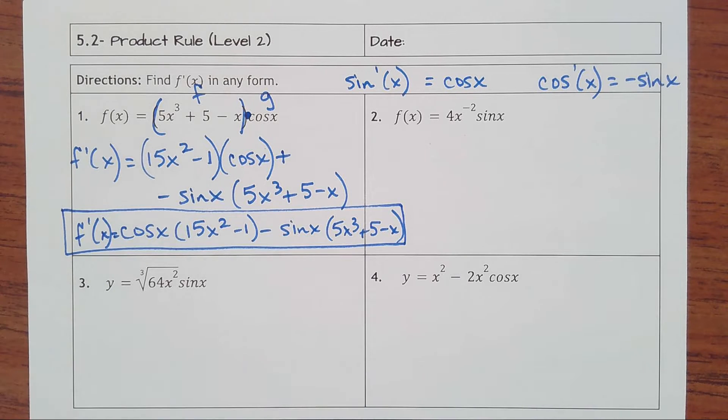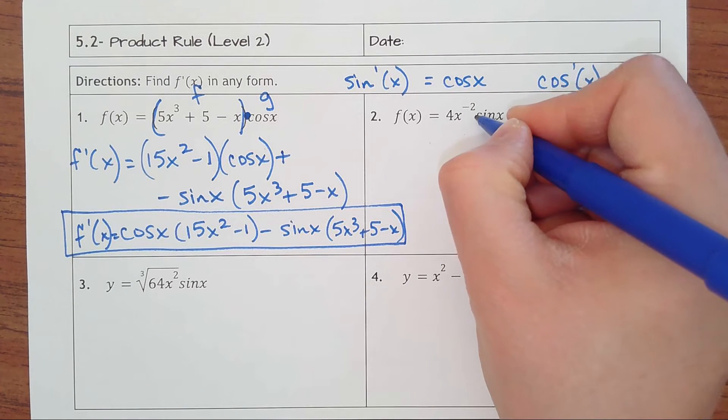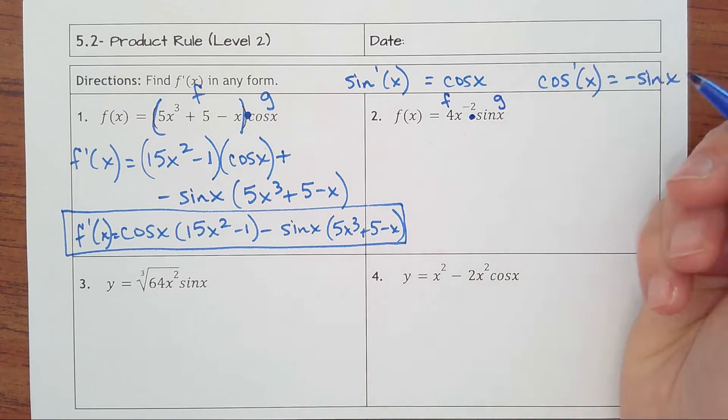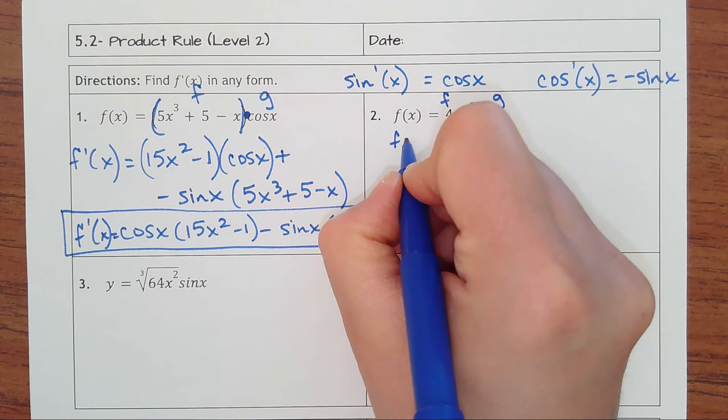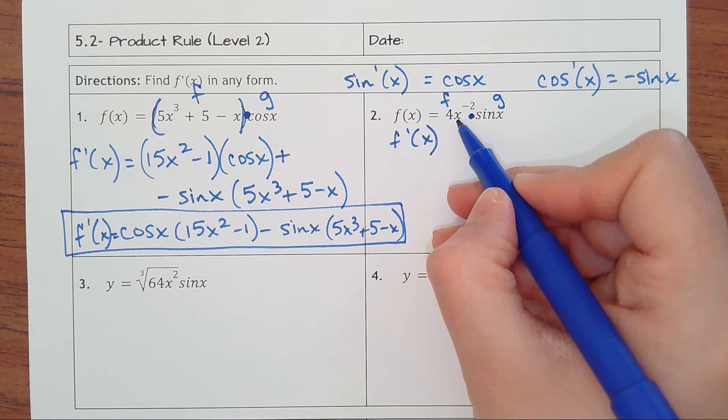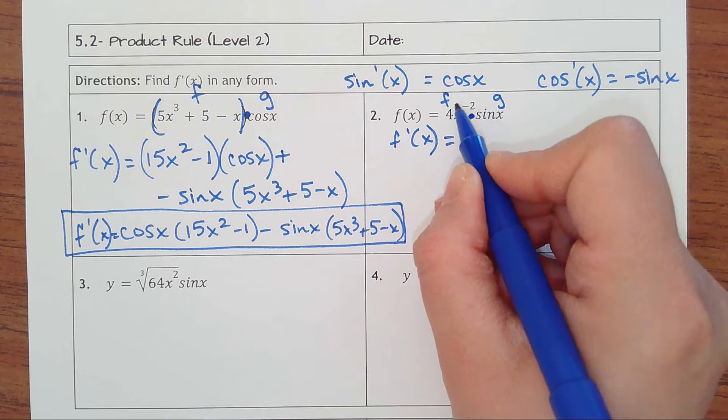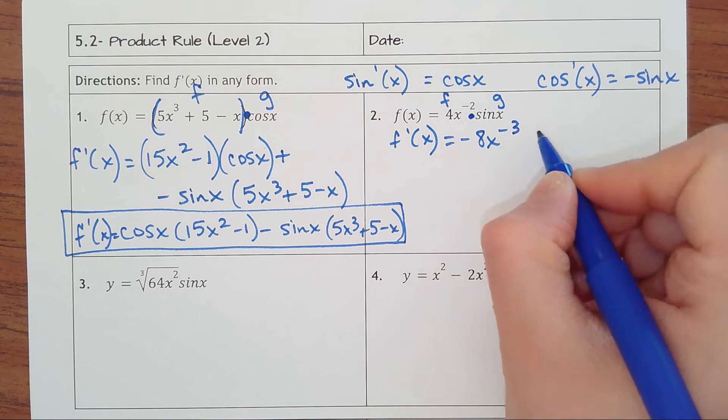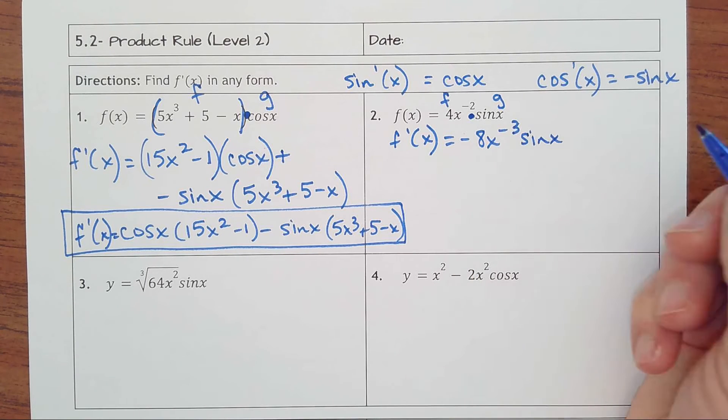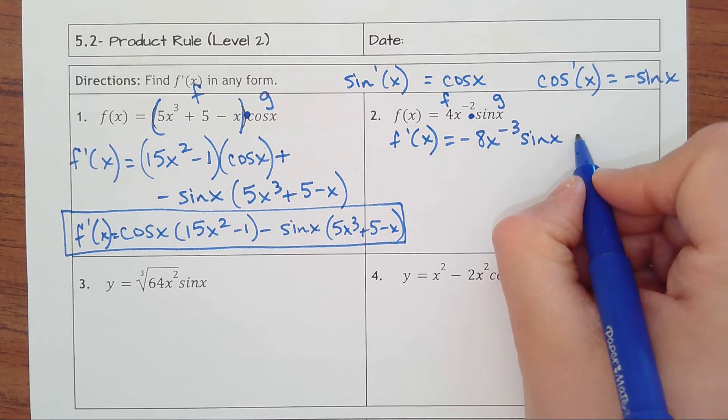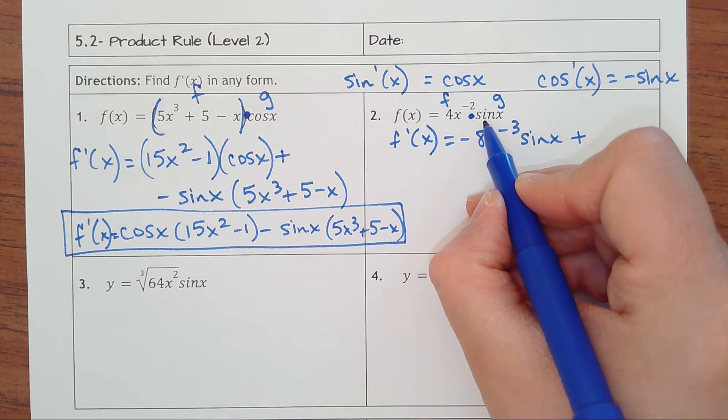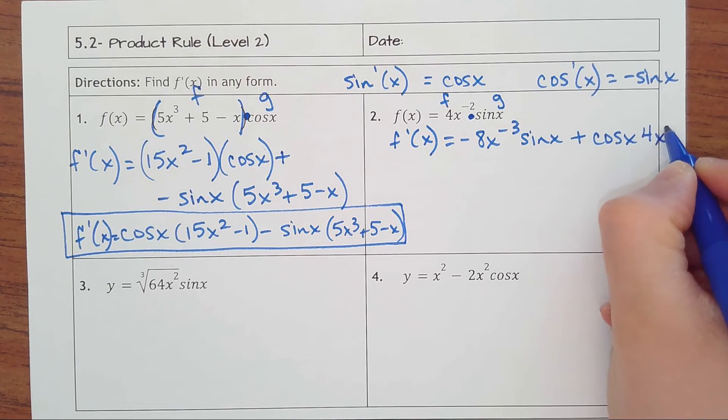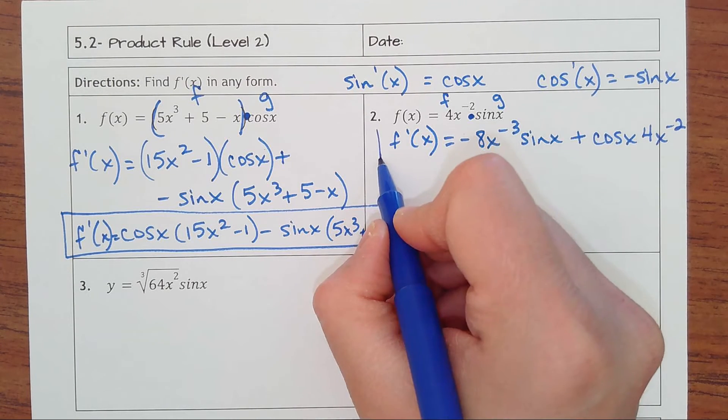All right, number two. We have 4x to the negative second times sine of x. So that's our two pieces. This is my f, this is my g. To take the derivative, I'm going to first take the derivative of f. That would be negative 8x to the negative third times sine of x. Plus, derivative of g, derivative of sine is cosine x, and then keep 4x to the negative second. And I would leave it just like that.